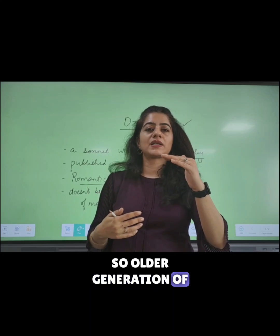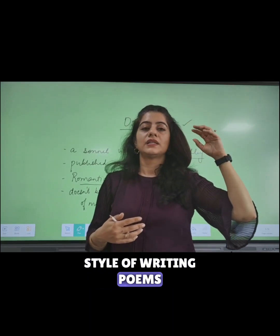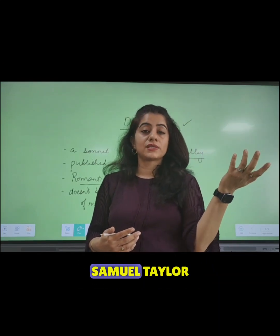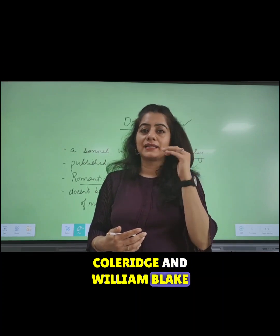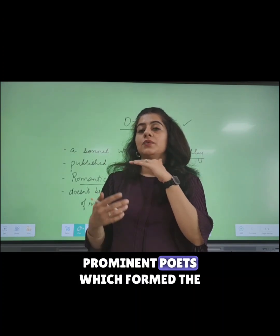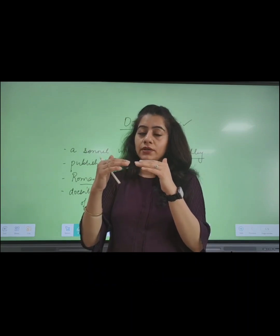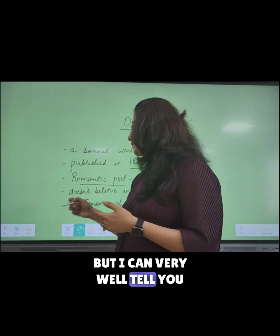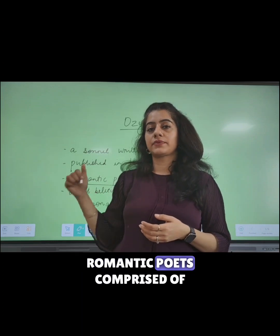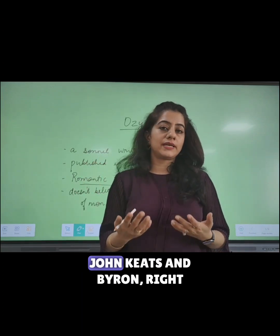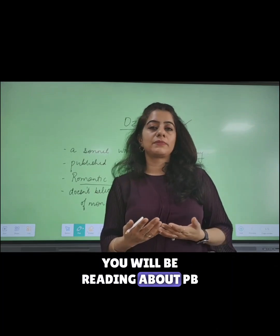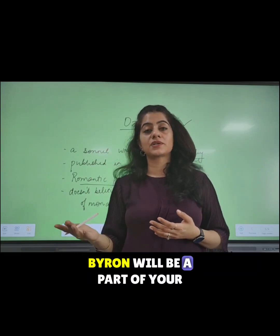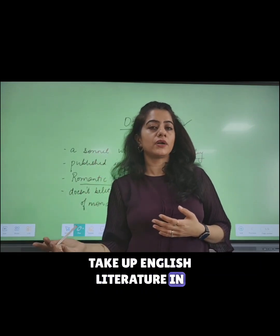The older generation of Romantic poets includes Wordsworth, Coleridge, Samuel Taylor Coleridge, and William Blake. The younger generation of Romantic poets comprised poets like P.B. Shelley, John Keats, and Byron. You will be reading about P.B. Shelley in this poem and John Keats in Class 12 English. Byron will be part of your syllabus when you take up English literature in graduation.